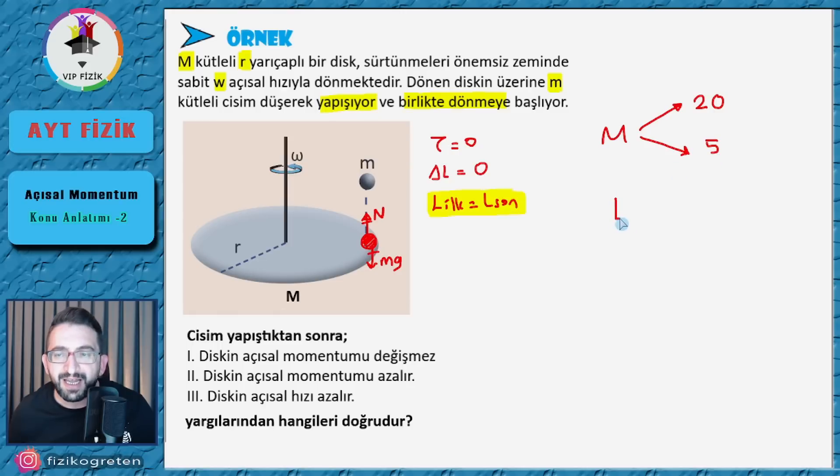L'den M'ye gelirken O noktasına göre açsal momentum azalır mı? Cisim bu tarafa doğru gittiği için sağ el kuralıyla açsal momentumu nokta yönünde. T'nin (ip gerilmesinin) oluşturduğu tork ise ters yönde (çarpı yönünde) — baş parmak içe doğru. Tork açsal momentuma zıt olduğu için açsal momentumuzu azaltır, yani dönmeyi yavaşlatır. L'den M'ye doğru gelirken O noktasına göre açsal momentum azalır — bu da doğru. Eğer aynı yönlü olsaydı açsal momentum artardı.